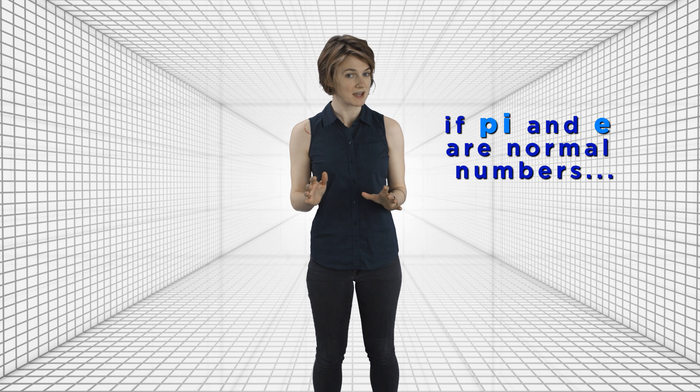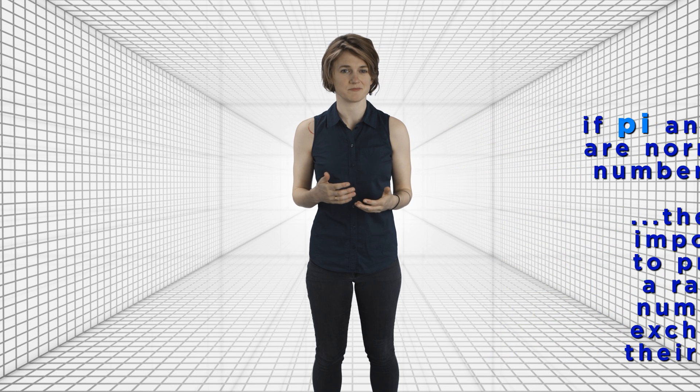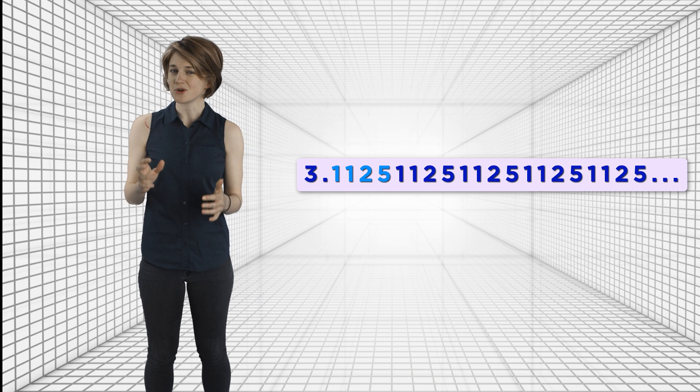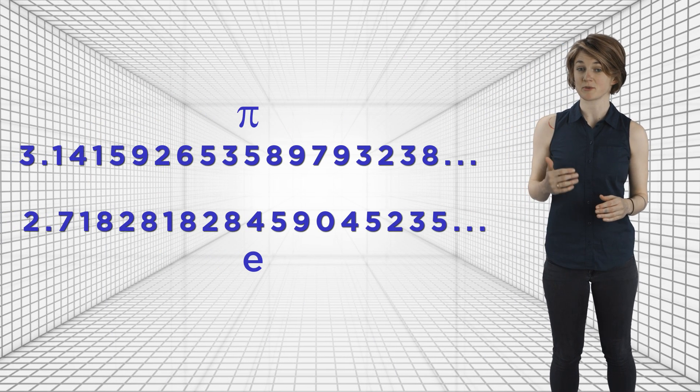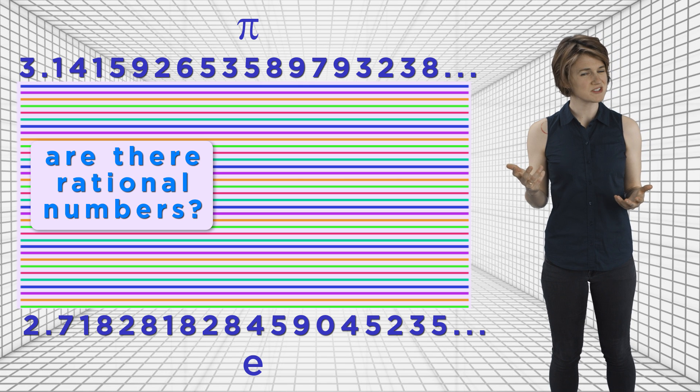Tao pointed out that if pi and e are normal numbers, as we suspect, then it's impossible to produce a rational number by exchanging their digits. If you want the technical argument, I recommend reading the original post linked in the description. But here's the intuition. If you did produce a rational number by exchanging the digits of pi and e, that number would have a repeating part of its decimal expansion, like this. But normal numbers don't like to repeat themselves, and blending two of them together doesn't change that fact. So on the list of all possible numbers generated by exchanging infinitely many digits of pi and e, are there rational numbers? Probably not.